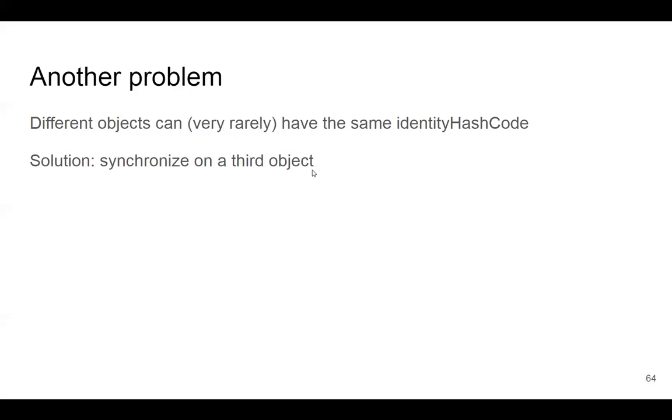The solution in this incredibly rare circumstance is to just have a third object lying around, or some global object, and you leave that object hanging around. Anytime two objects happen to have the same identity hash code, you would synchronize on that bonus object. This would mean every object that was in this case would have to wait, but this would almost never happen. This is an incredibly rare situation, so that's a good solution to that problem.